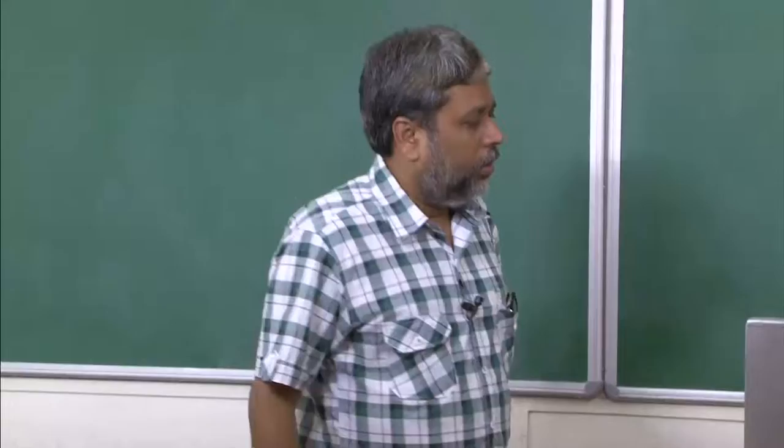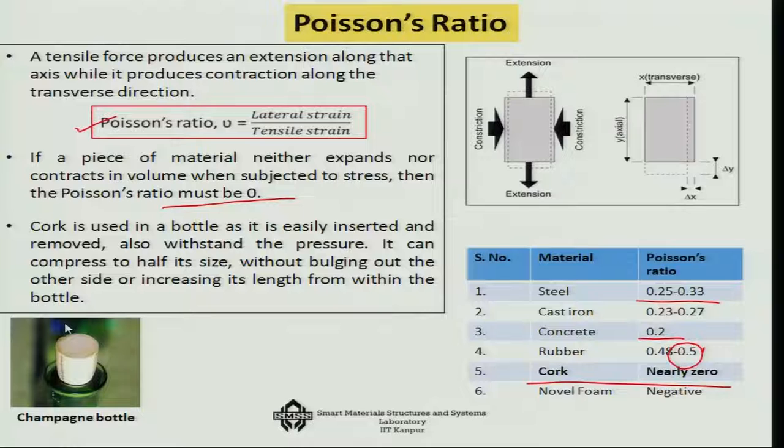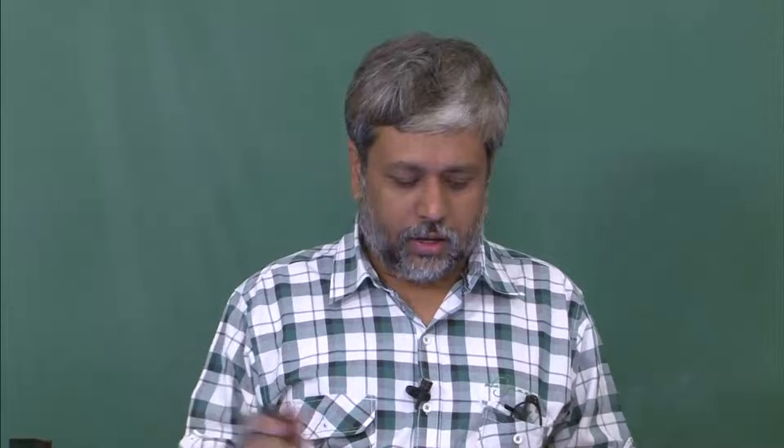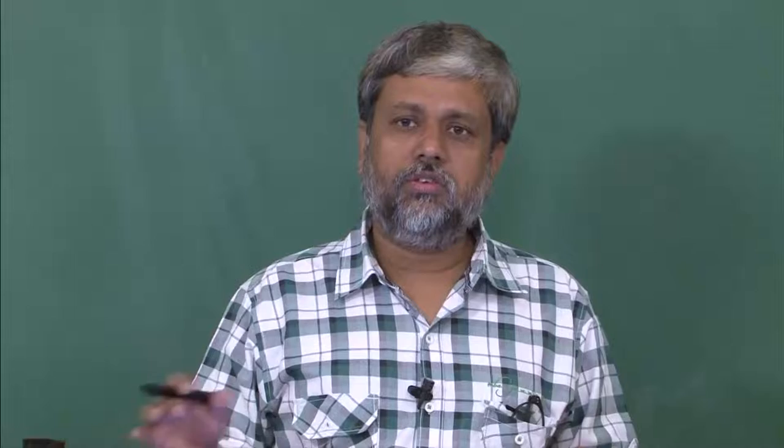We have talked about various types of Poisson's ratios, which is definitely a very important material property consideration when selecting a material. We have also talked about stress and strain. The stress and strain are related by something known as Hooke's law. Hooke's law can be considered as a relationship between a single stress factor and a single strain, or in a generic sense, between a stress tensor and a strain tensor.